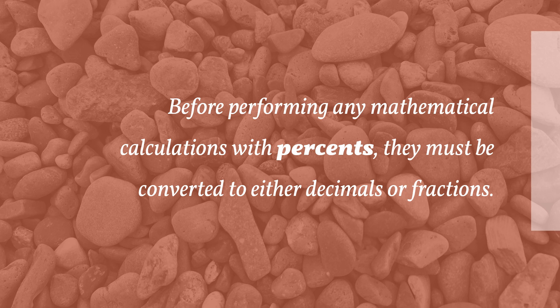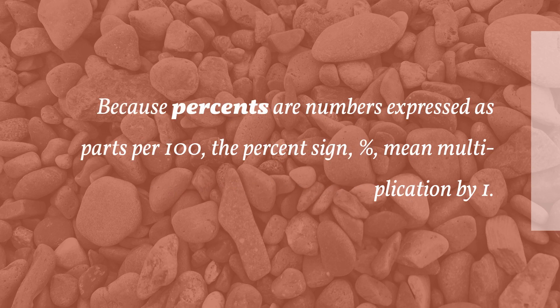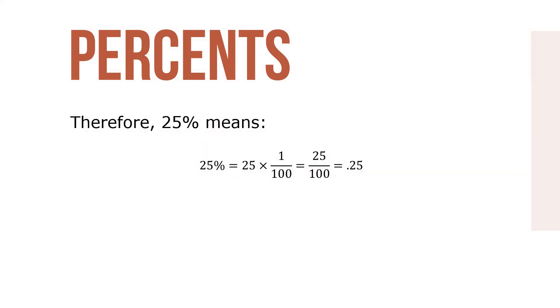Before performing any mathematical calculations with percents, they must be converted to either decimals or to fractions. Because percents are numbers expressed as parts per 100, the percent sign means multiplication by 1/100. Therefore, 25% means 25 times 1 over 100, which equals 25 over 100 or, in decimal form, 0.25.